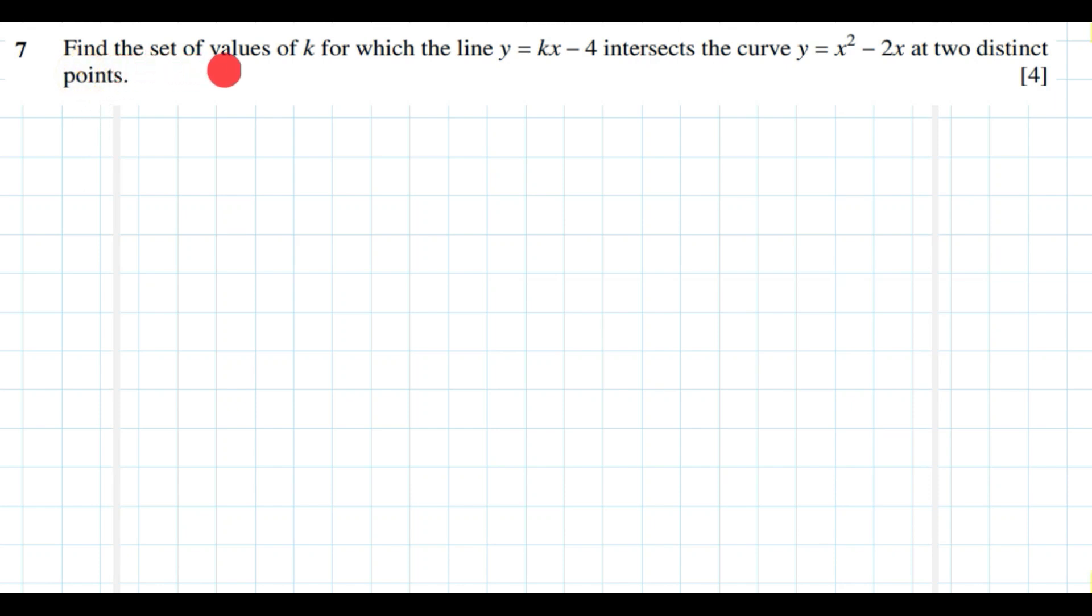The next question is: find the set of values of k for which the line y equals kx minus 4 intersects the curve y equals x squared minus 2x at two distinct points.